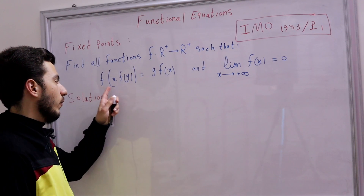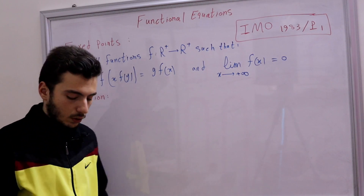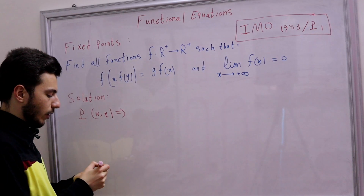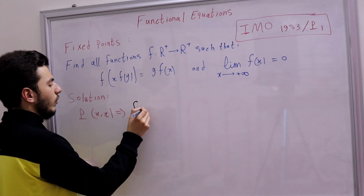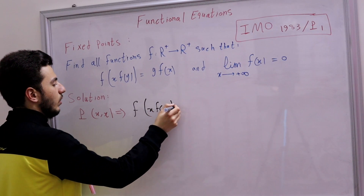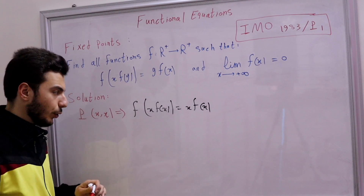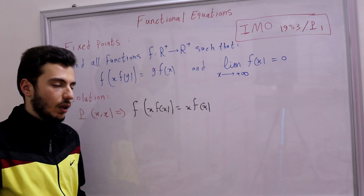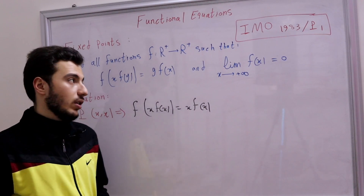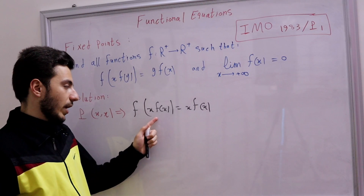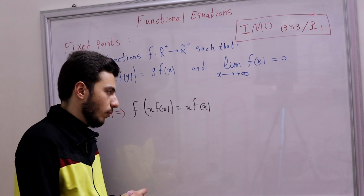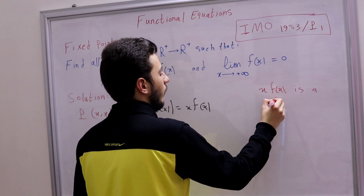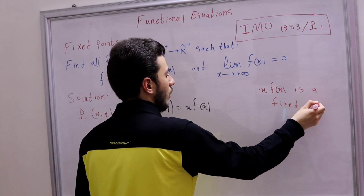Substituting P(x, x) into the original equation gives f(x·f(x)) = x·f(x). This means x·f(x) satisfies f(α) = α — that's exactly the definition of a fixed point. So x·f(x) is a fixed point of f.